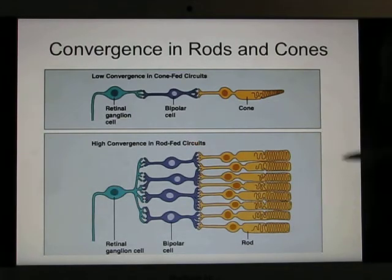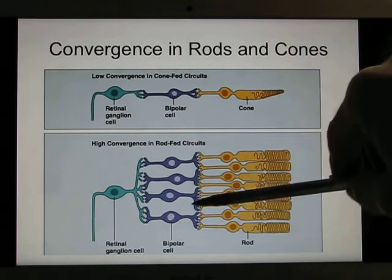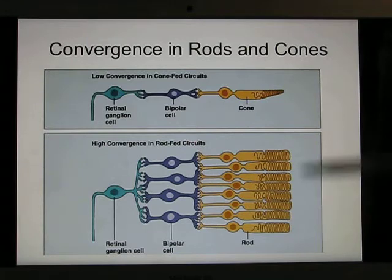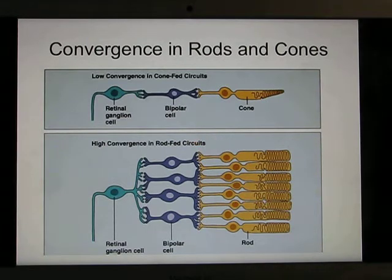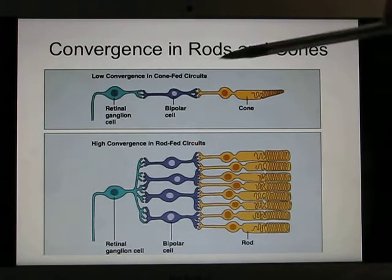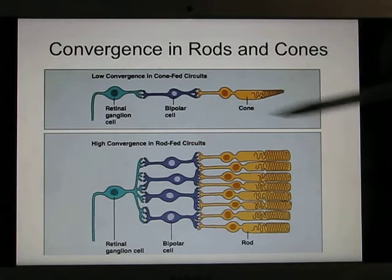A big receptive field and high convergence means low resolution. That's why the rod system has low resolution and you need the cone system for high resolution. In the fovea, it's all cone system.